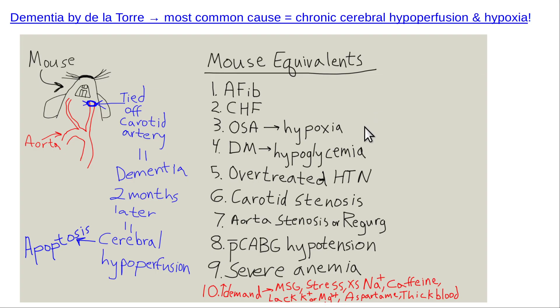The whole Alzheimer's thing is a bit of a joke - you can't effectively diagnose it while the patient is alive or when they're dead, and you can't treat it. If you can't diagnose it, how do you know it's real?